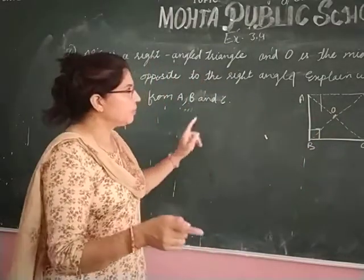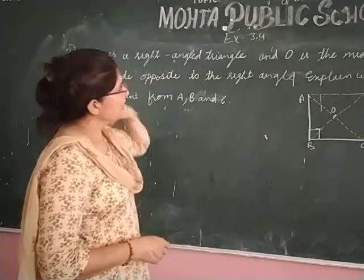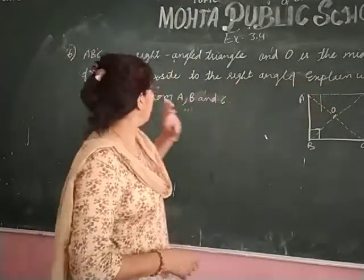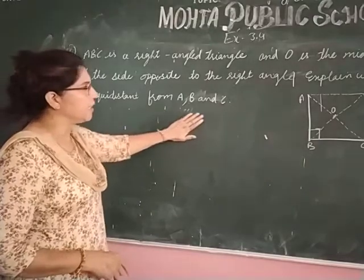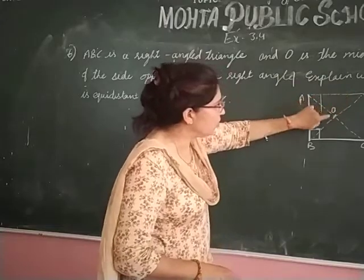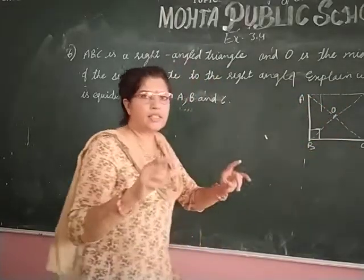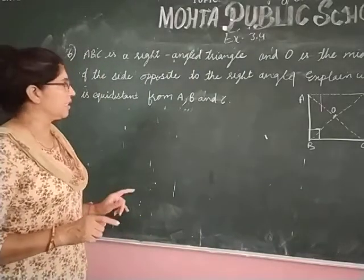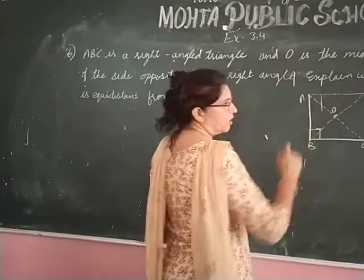Is it clear? Mind it, AO is equal to OC. Explain. O is equidistance from A, B and C. Now what do we have to show? That this point O, O to A, O to B, O to C, the distance is equal in all three. Equidistance means O to A, O to B and O to C. Clear?